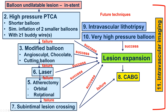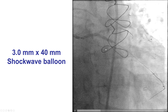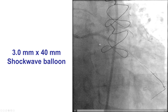This is the algorithm for in-stent balloon undilatable lesions. The first step is high-pressure inflations, which we did. The second is to use various plaque modification balloons, which we also did. The third step usually is to use laser with contrast, followed by atherectomy if that fails. However, in this case, we decided to use off-label intravascular lithotripsy balloon, which was delivered through the lesion — a 3.0 by 40 mm peripheral shockwave balloon — and then 80 pulses were given.